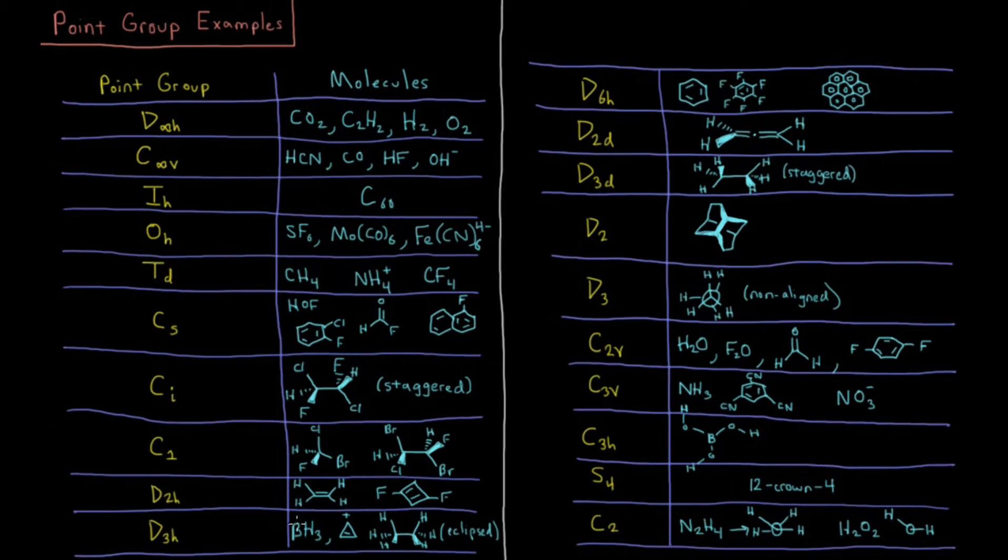D3H, things like BH3, things like cyclopropylene cation there, or the eclipsed configuration of ethane in the eclipsed configuration only.